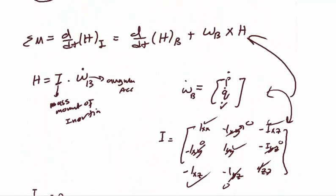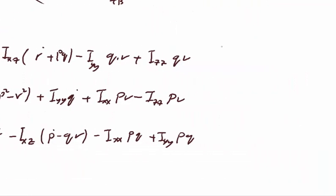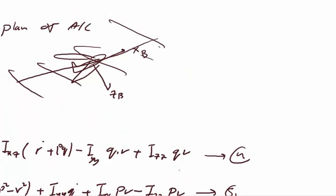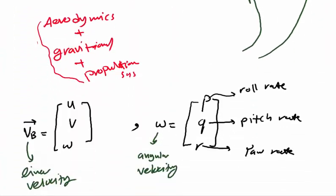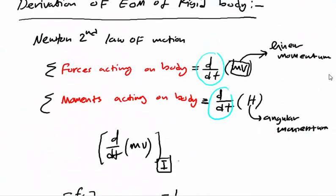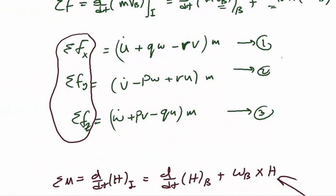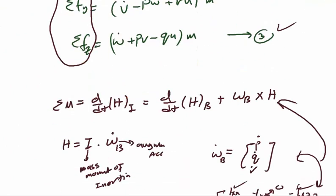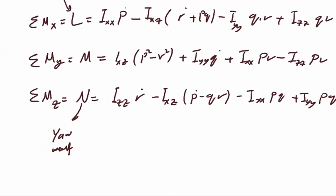This is straightforward — you substitute the angular velocity components and the inertia matrix into the moment equation and find the components of Mx, My, and Mz. So in total we have six equations: three force equations and three moment equations.